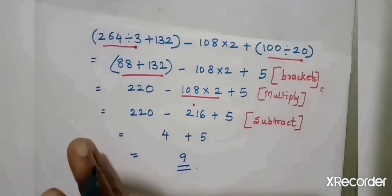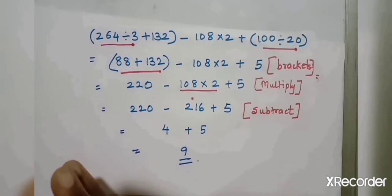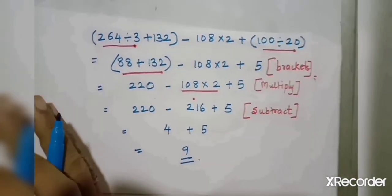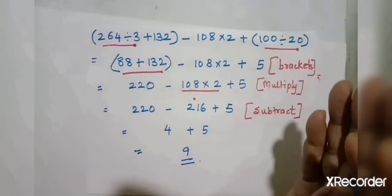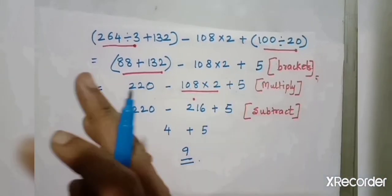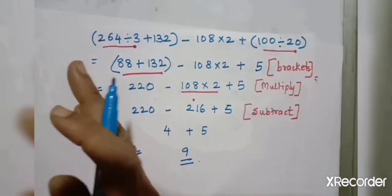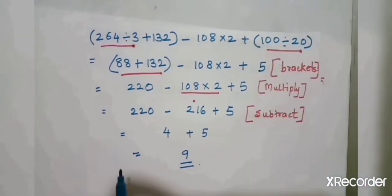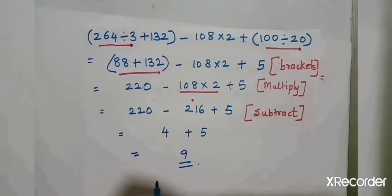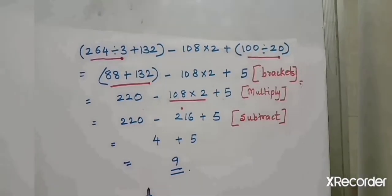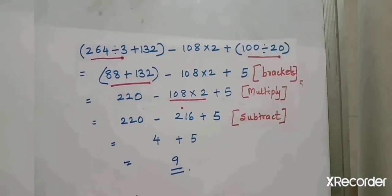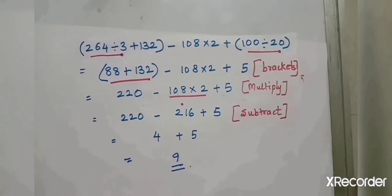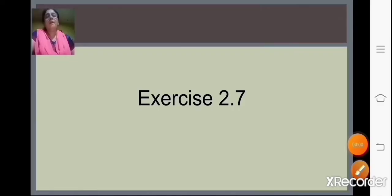Always whenever there are two or three operations, start from left to right — whichever operation comes first from left to right, we carry that out first and do the simplification.